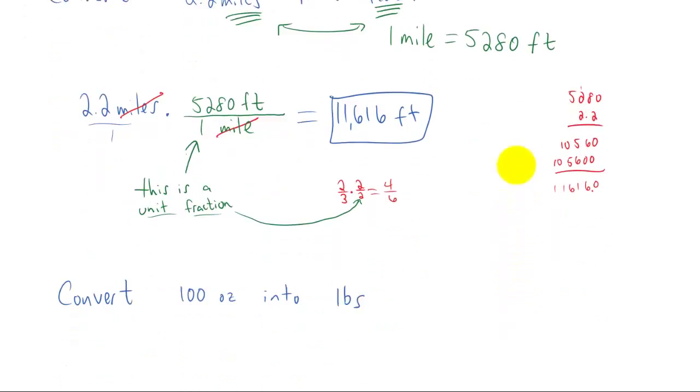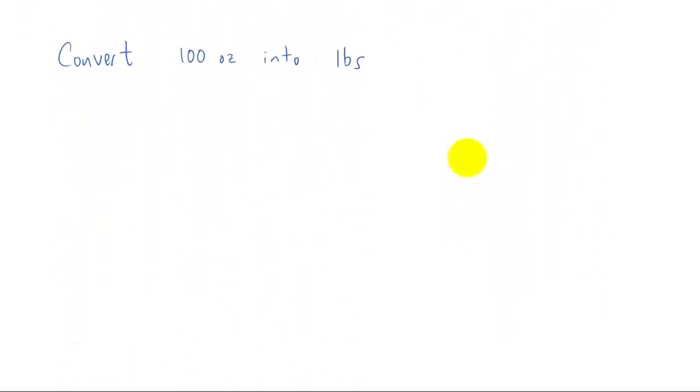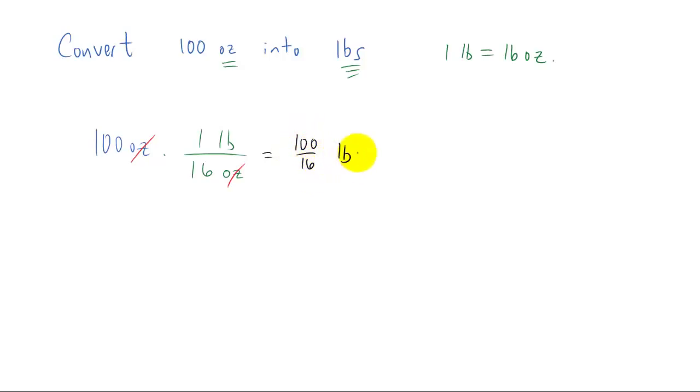Okay, let's do another example. Let's convert 100 ounces into pounds. Again, all you have to do is find a relationship between ounces and pounds. I'm looking it up right now and it turns out that 1 pound is 16 ounces. So we put that conversion into unit fraction. And the important part is making sure that our units line up. So if we want to get rid of our ounces, we need ounces in the denominator of our unit fraction, just like that. The ounces cancel, we're left with pounds, which is what we want. And if we multiply these fractions together, we get 100 over 16 pounds.